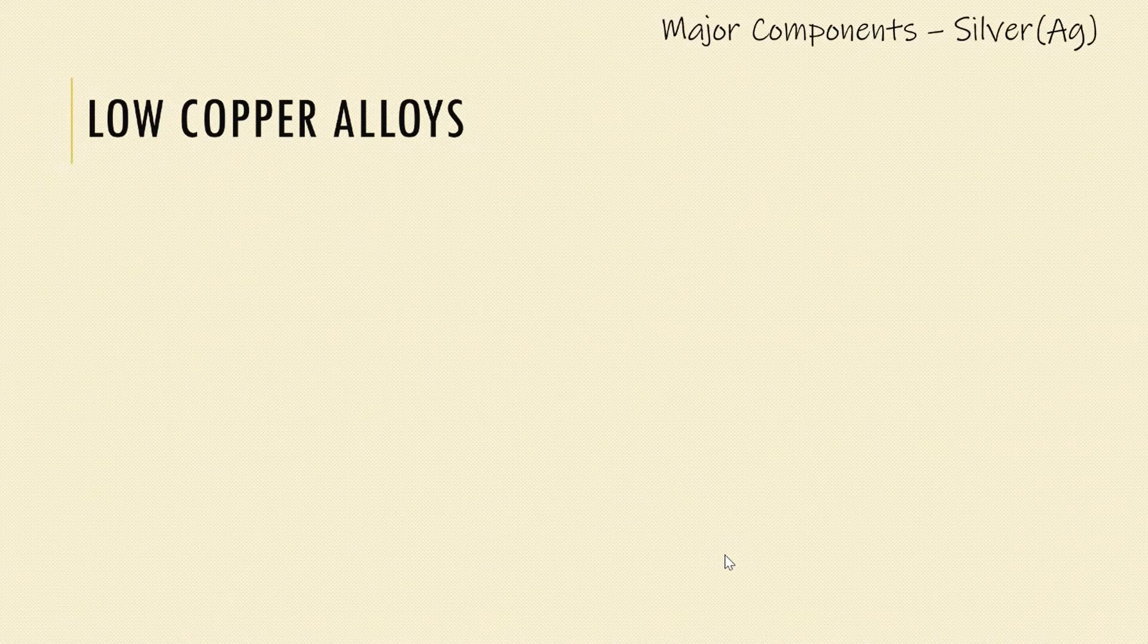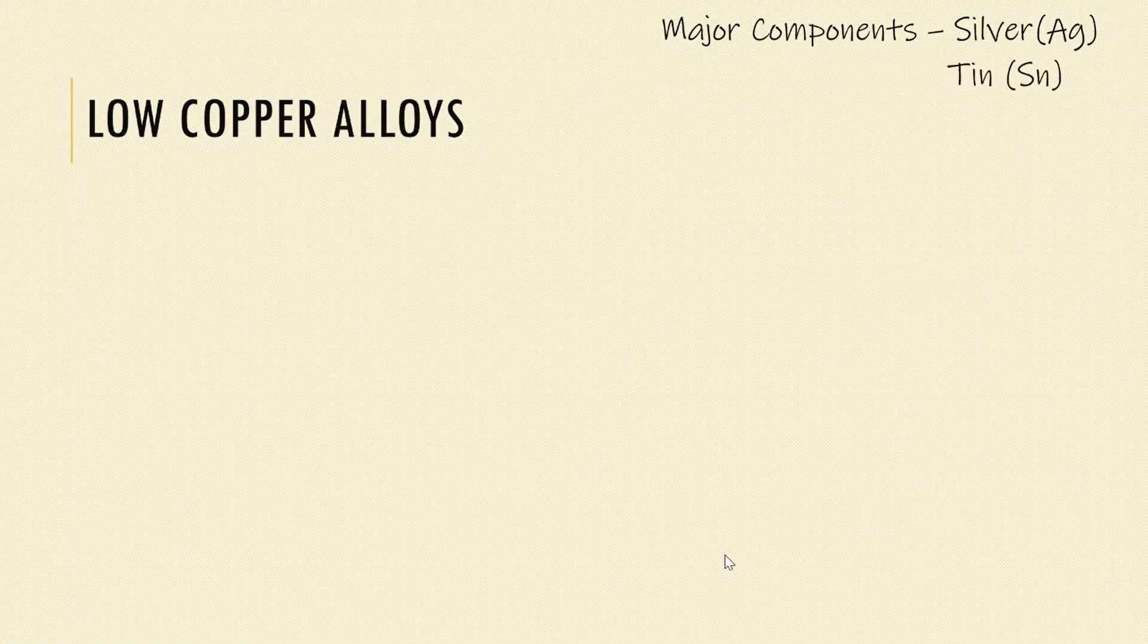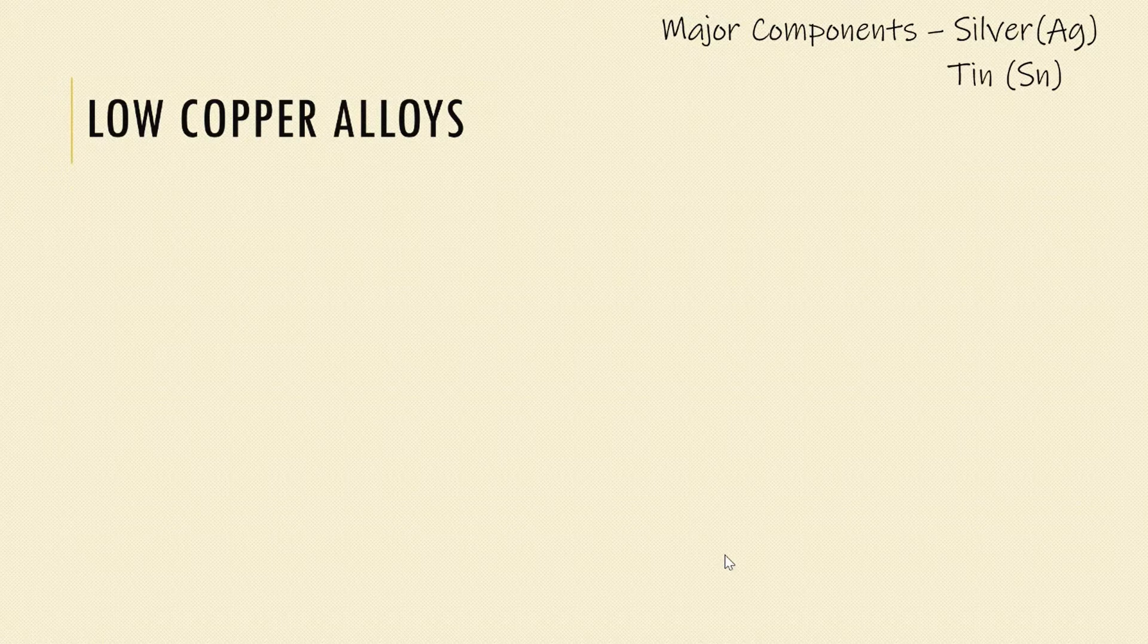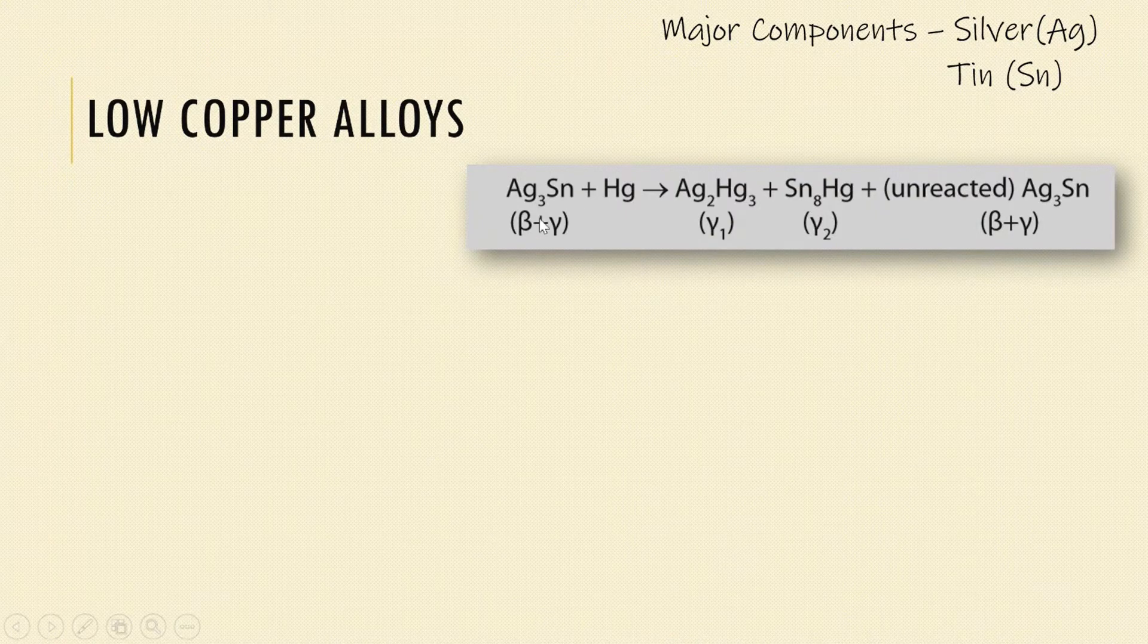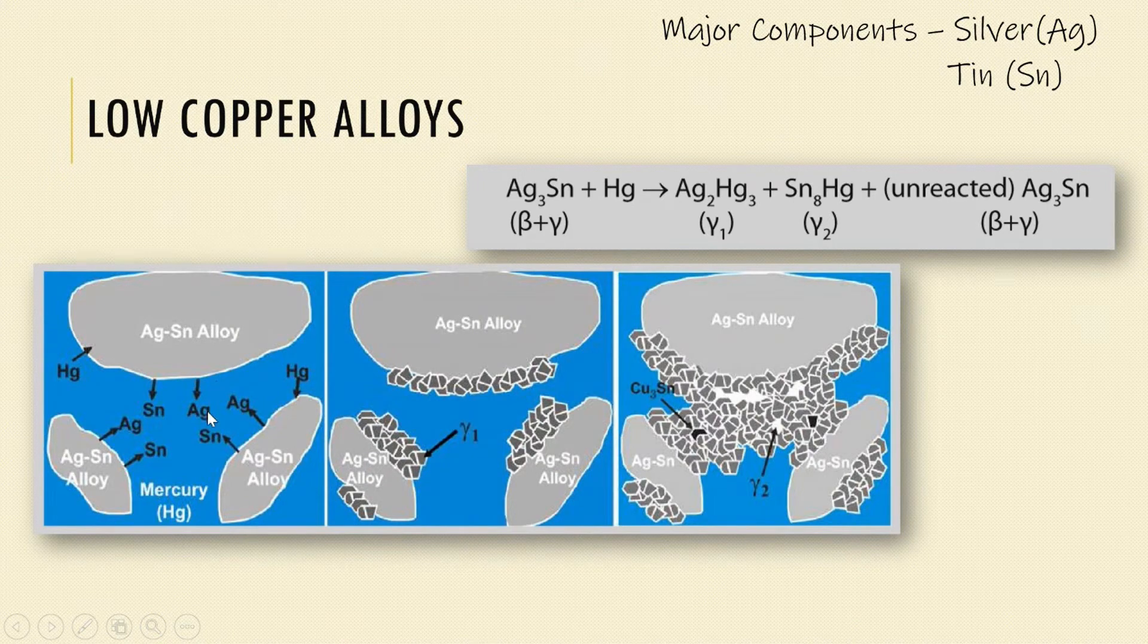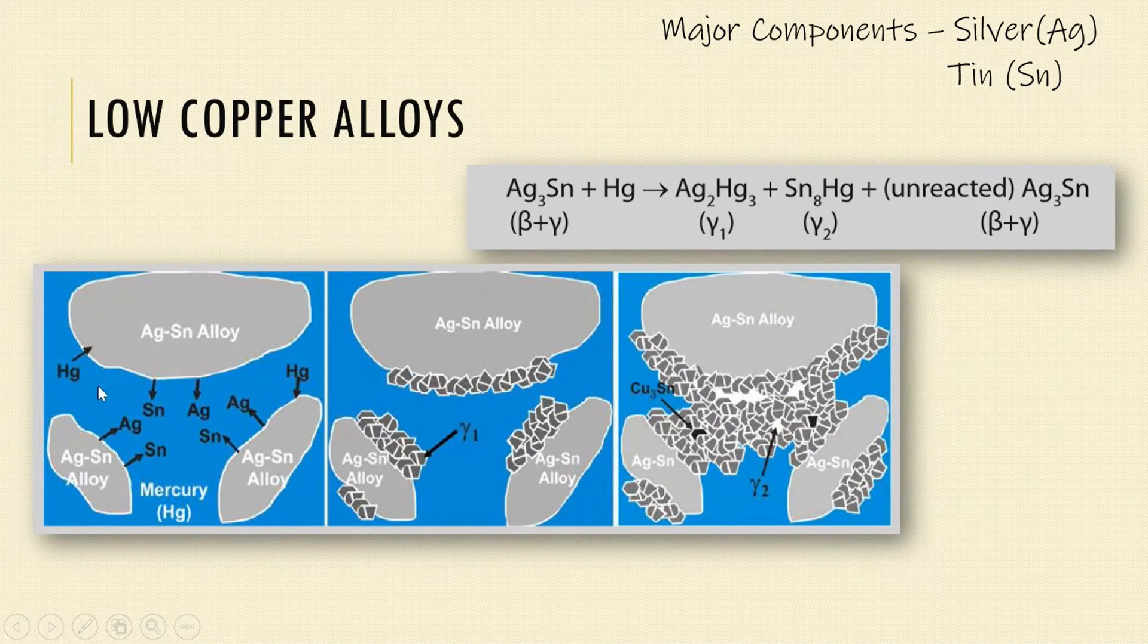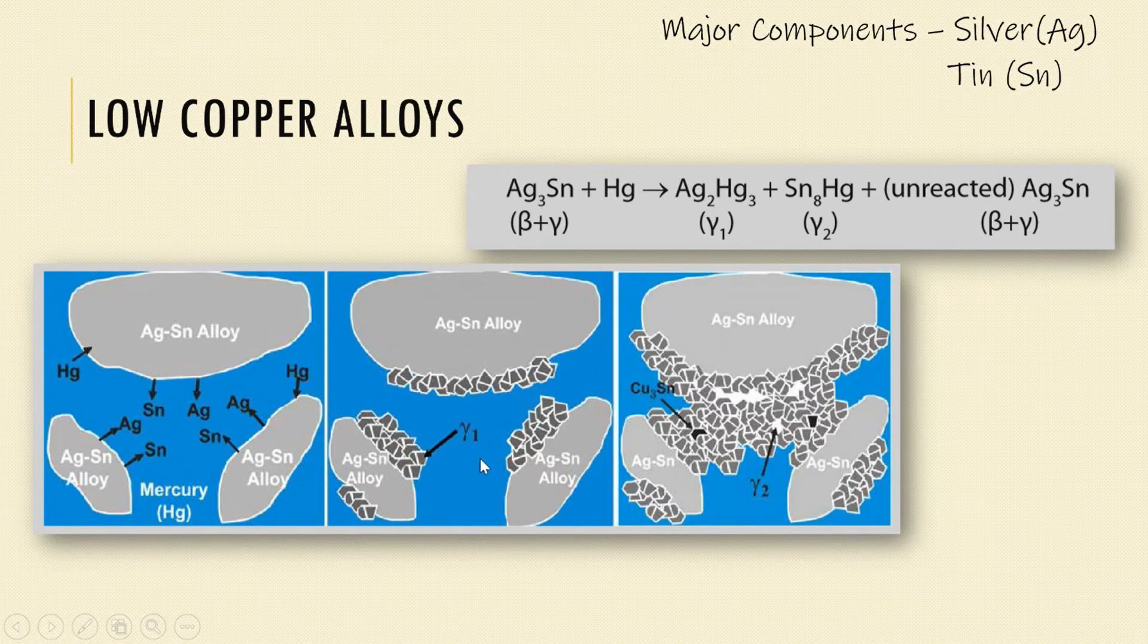Let us now understand the setting reaction in each of these alloys. The low copper alloys: The major components are silver which is 63-70% and tin which is 26-29%. When the alloy powder and mercury are triturated, the silver and tin in the outer portion of the particle dissolves into the mercury. Mercury diffuses into the alloy particles and starts reacting to form crystals of silver mercury and silver tin compounds.